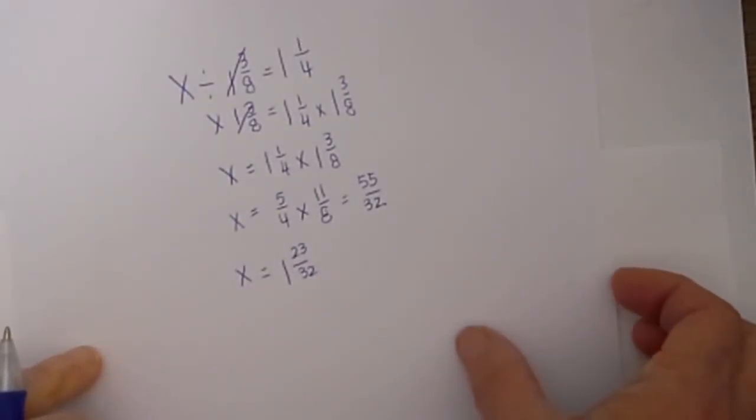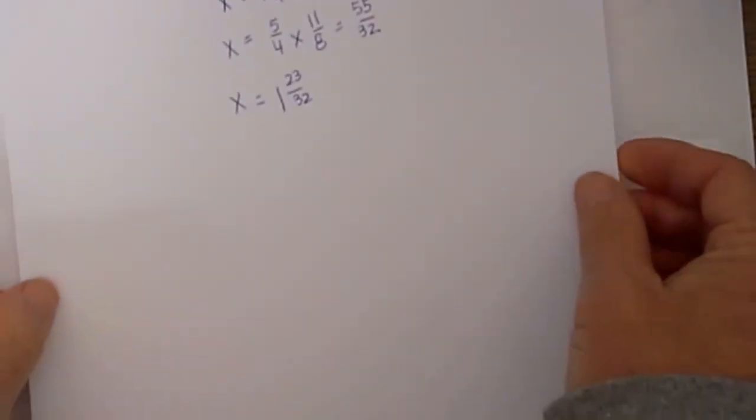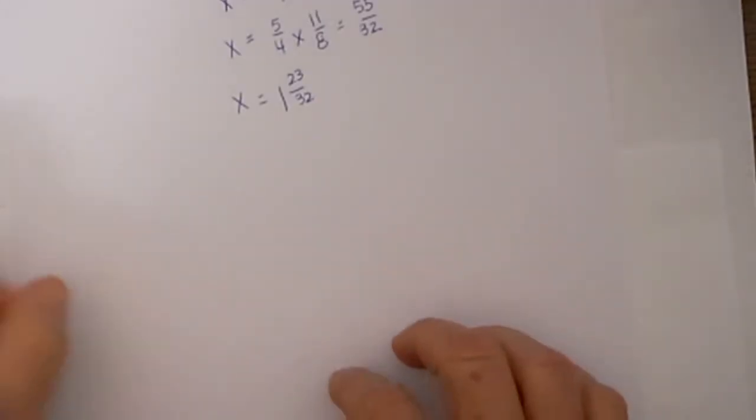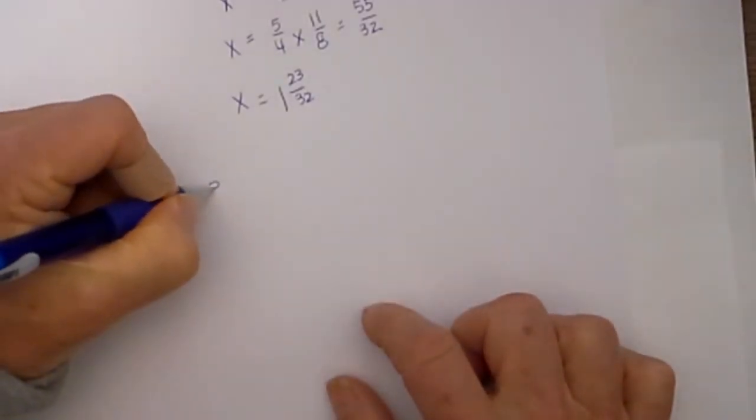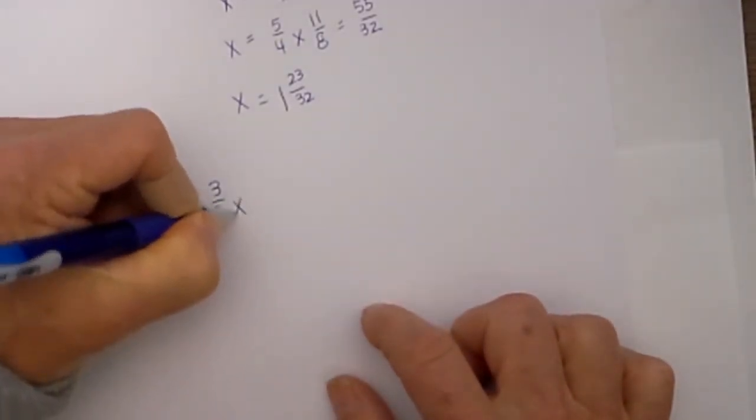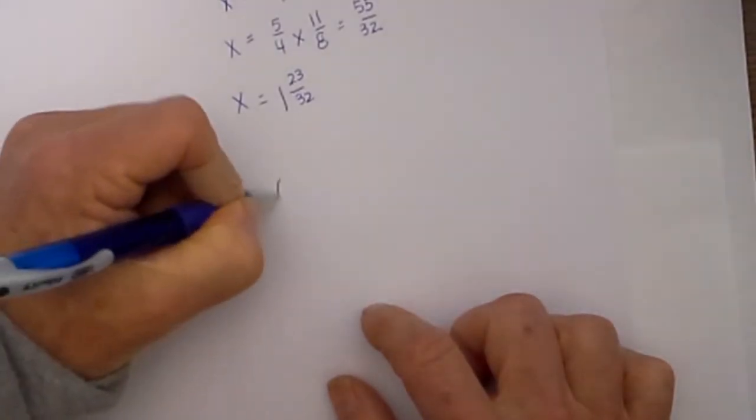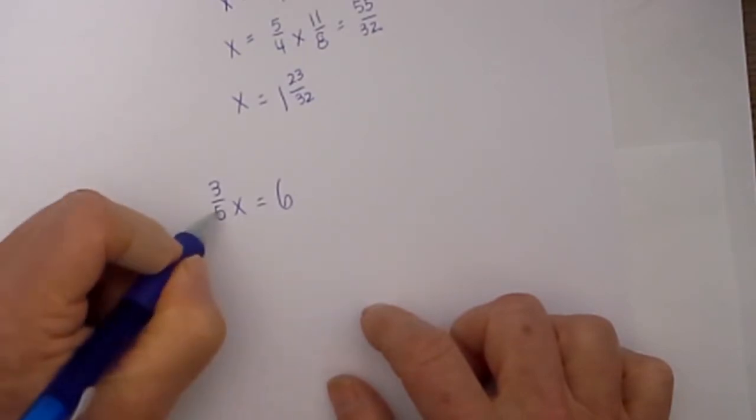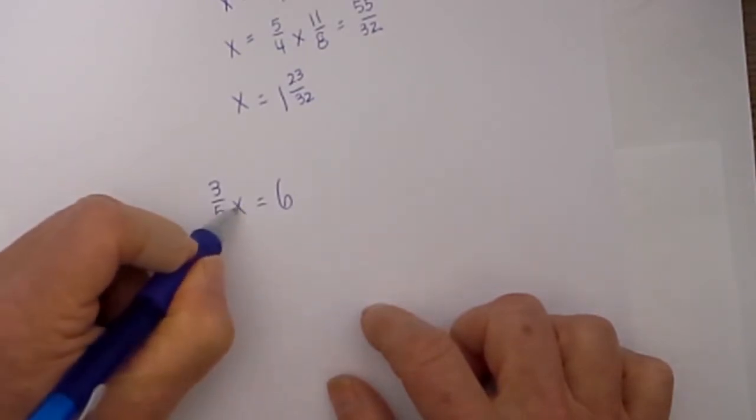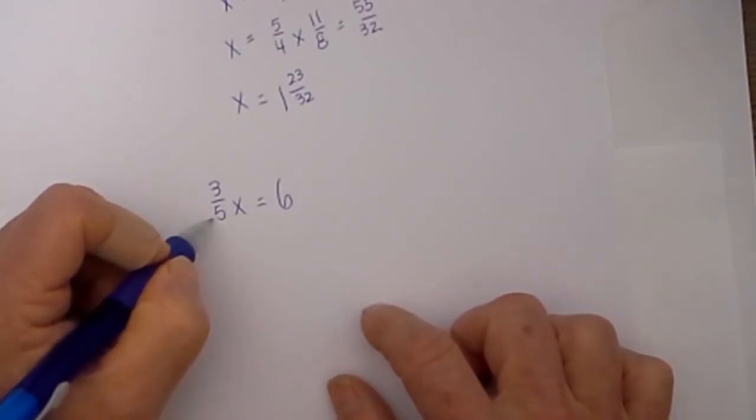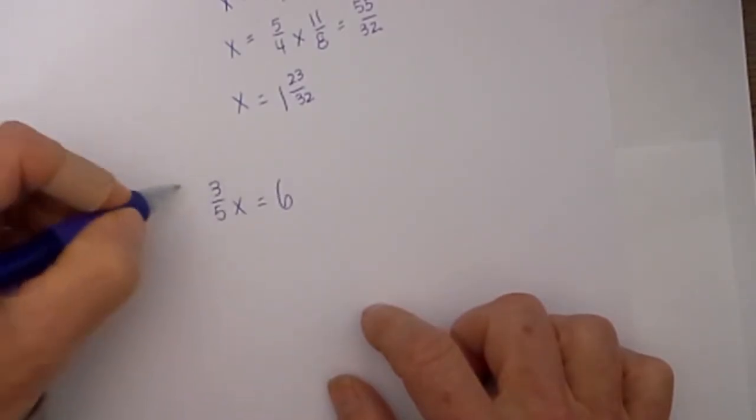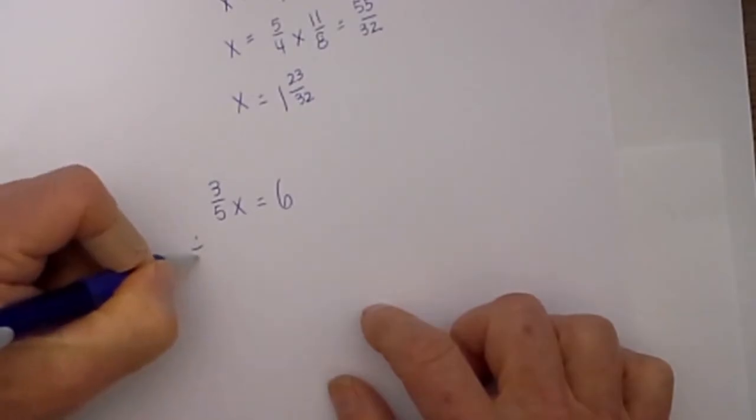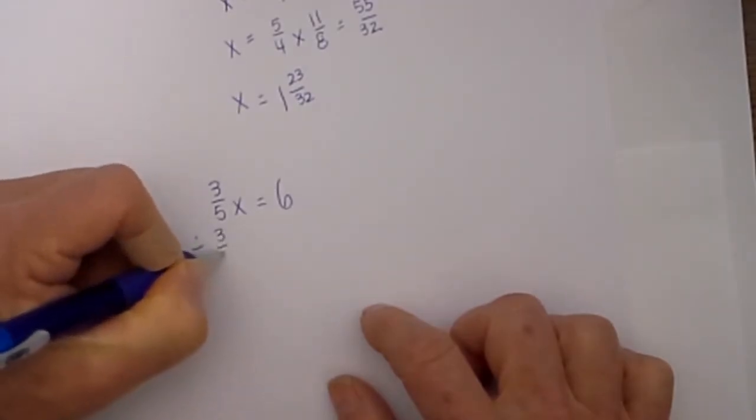So that is your answer for that one step equation. And finally let's look at one more. Our last one is 3/5x is equal to 6. So I need to get x by itself. I know when the 3/5 is sitting right next to the x that tells me that it is multiplication. So in order to undo multiplication I am going to divide by 3/5.